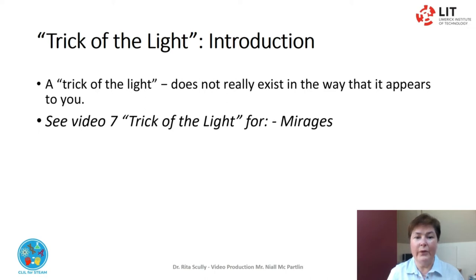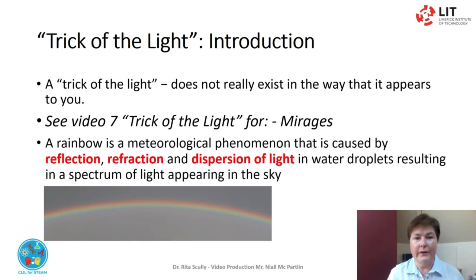Look at video 7 Trick of the Light Mirages for another example. A rainbow is a meteorological phenomenon caused by reflection, refraction and dispersion of light in water droplets, resulting in a spectrum of light appearing in the sky. It takes the form of a multicolour circular arch. Rainbows that are caused by sunlight always appear in the sky directly opposite the sun.